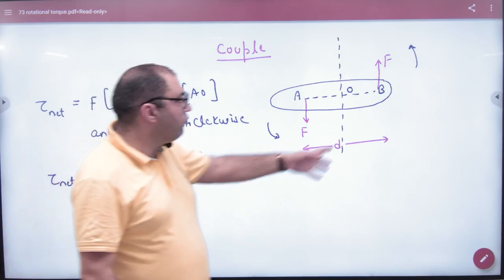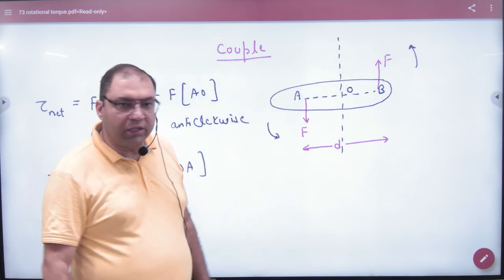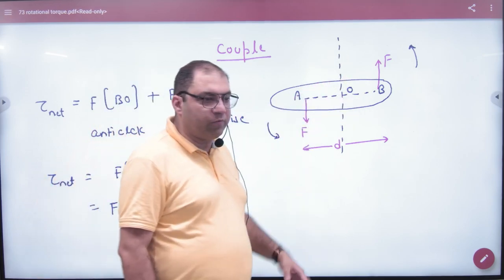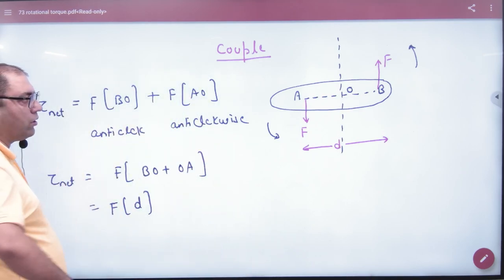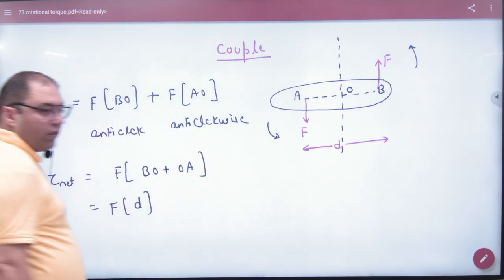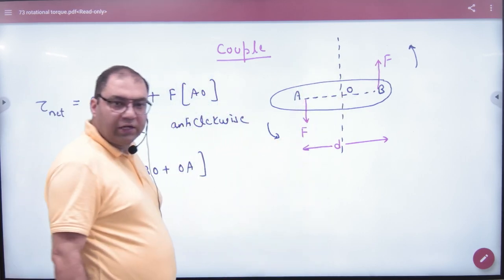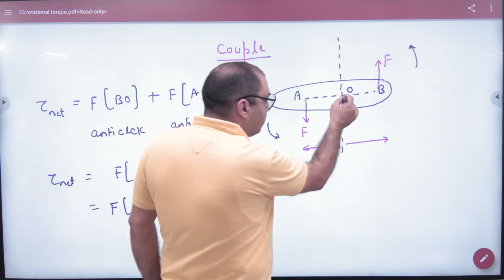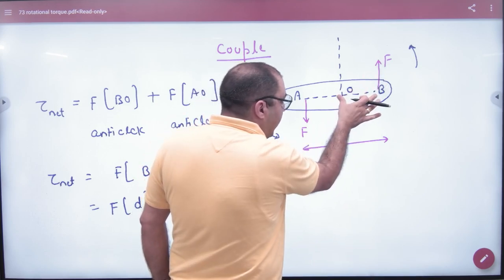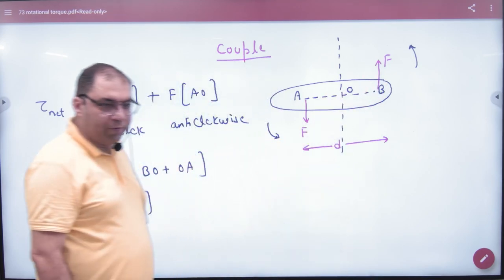If one force is up and one force is down, the distance is D and this is the axis of rotation. So what will the torque be in this couple? What torque will the F force generate? From this axis of rotation, force into perpendicular distance, which is F into OB.